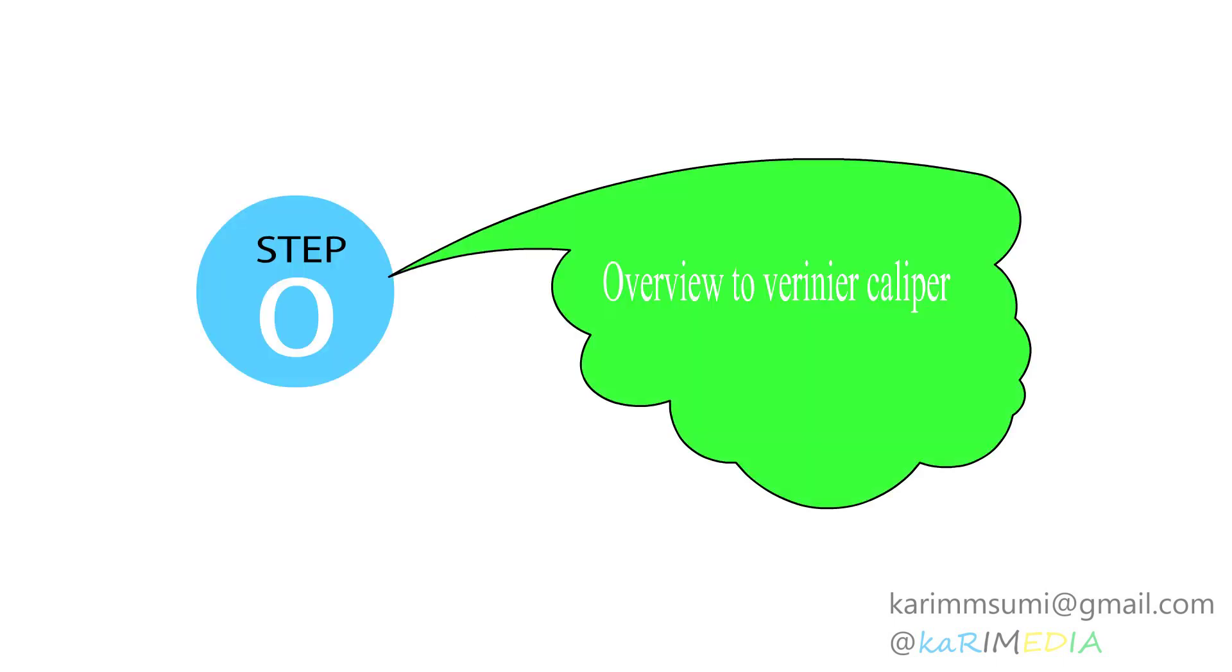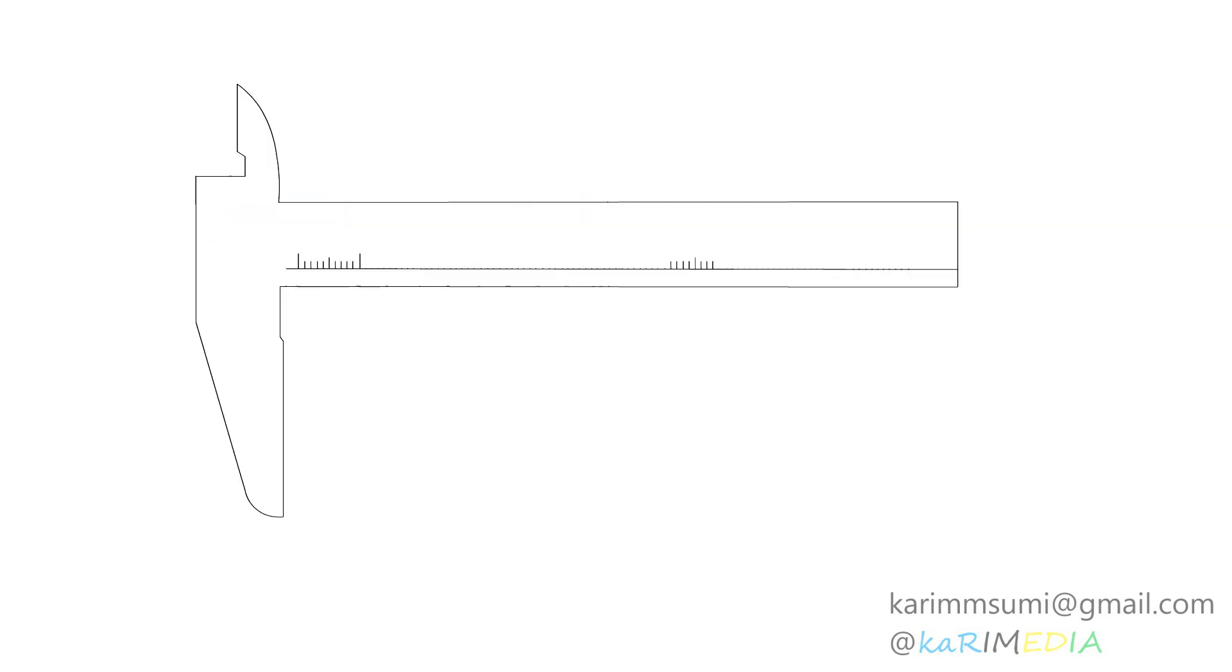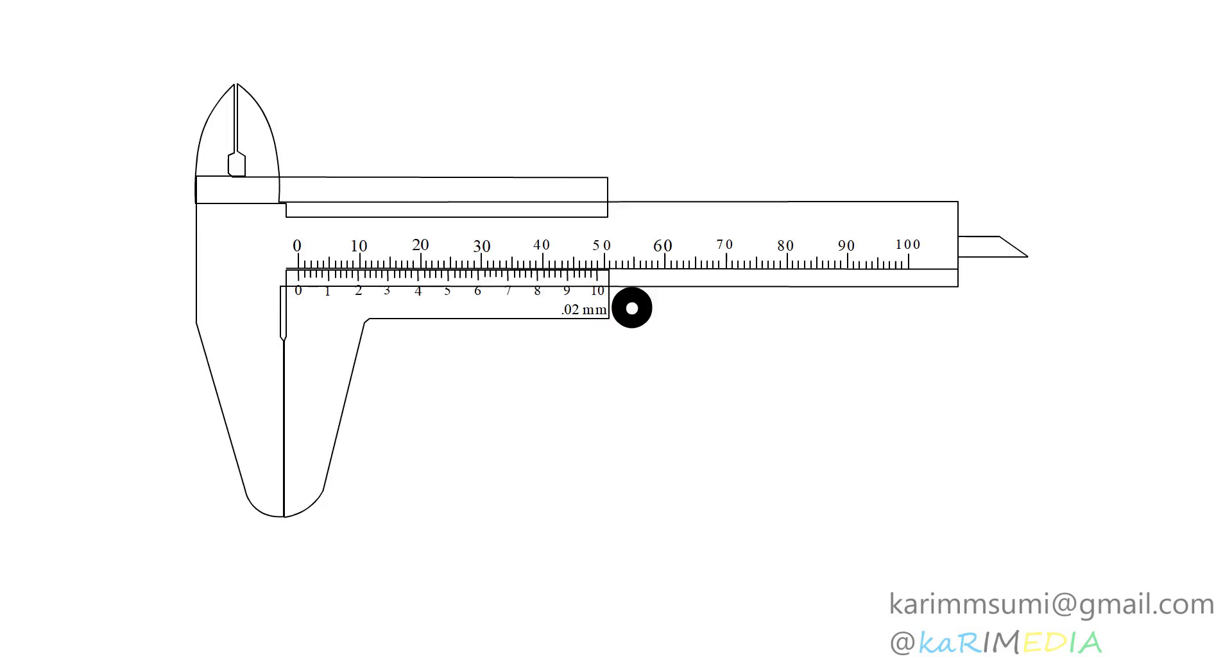Step 0: This is an overview of the vernier caliper. The vernier caliper helps to measure diameter of small objects. It contains two scales. The one shown starting from 0 to 10 is called the vernier scale, and its metrics are in millimeters. The second one, starting from 0 to 100, is called the main scale.